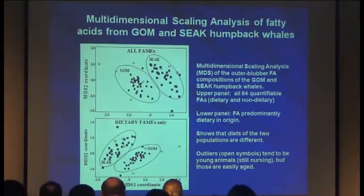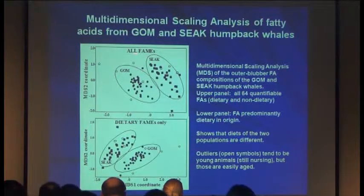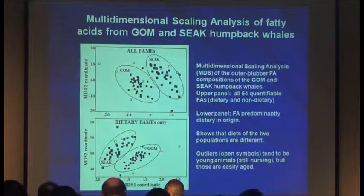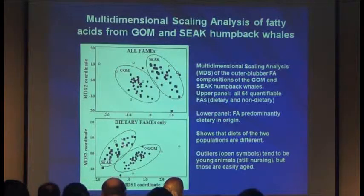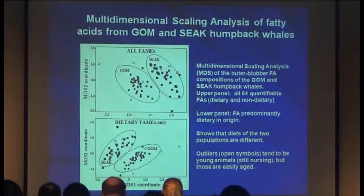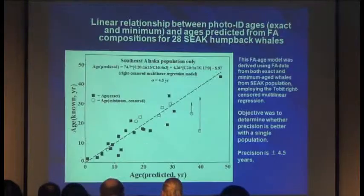Here we're looking at multidimensional scaling analyses of fatty acids from Gulf of Maine and southeast Alaska humpback whales — all fatty acids combined in one MDS plot, and just dietary fatty acids below. You can see differences between the Gulf of Maine and southeast Alaska, as expected. The outliers Dave showed were very young animals that were probably still nursing, but those are more easily aged in the field.